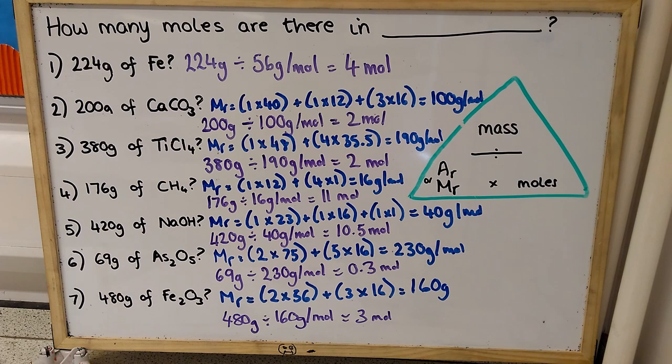Then when we look at arsenic pentoxide, you should have worked out that its relative formula mass is going to be 230 grams per mole. And so there, because we've got less than 230 grams, we've ended up with a decimal. We've got 0.3 moles.